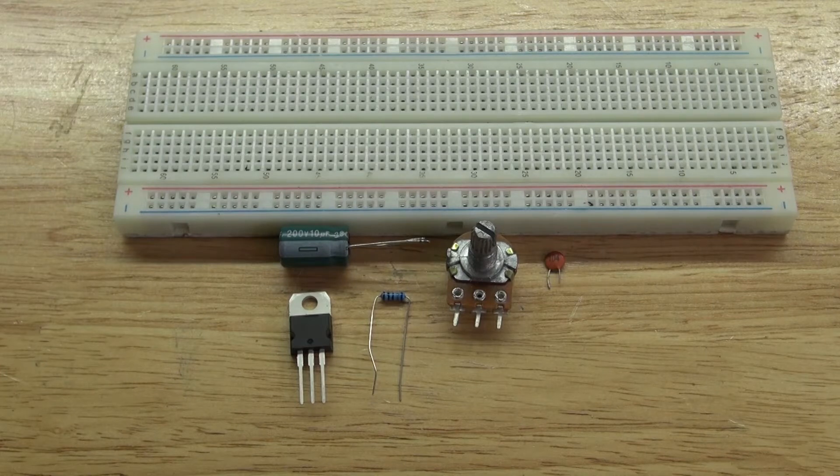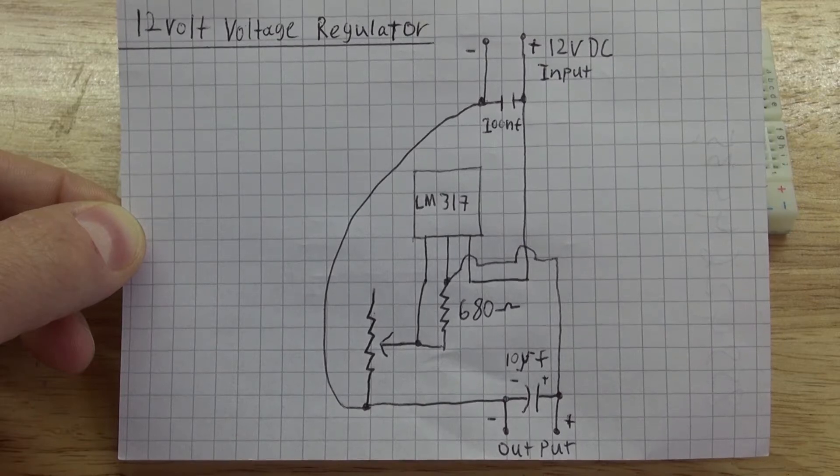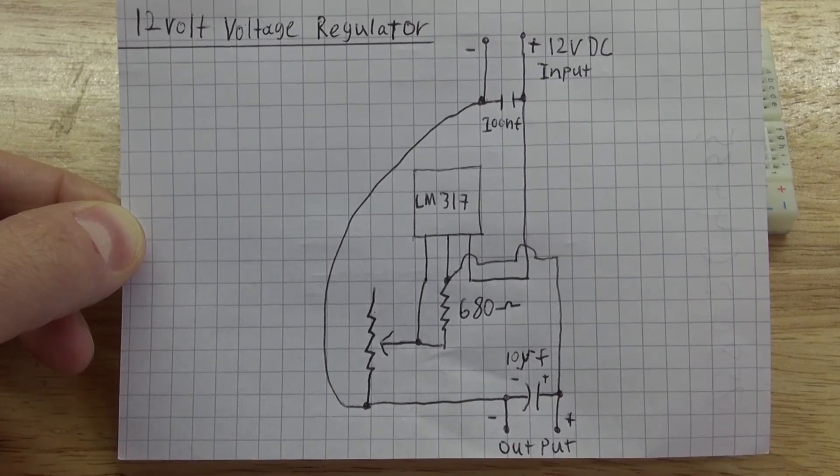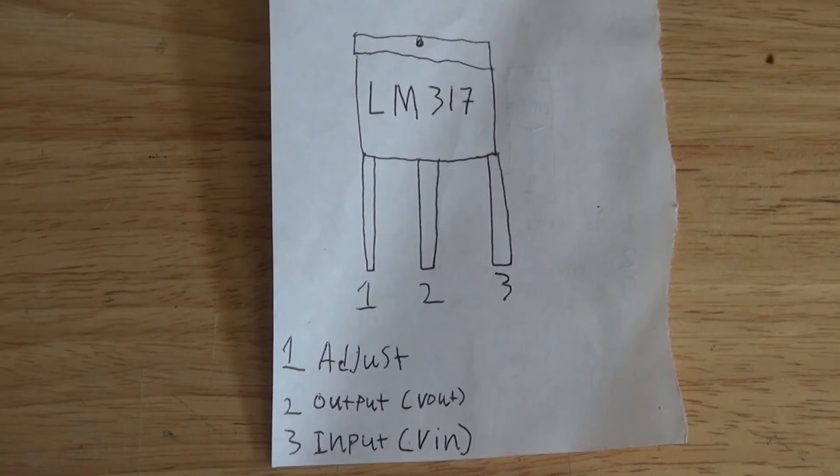These are the items that you're going to need to make the circuit. This is the schematic to make this 12 volt voltage regulator. This is the pinout of the LM317 transistor. Pin 1 is the adjustment to be able to adjust the voltage, pin 2 is the output for the output voltage, pin 3 is the input for the input voltage.